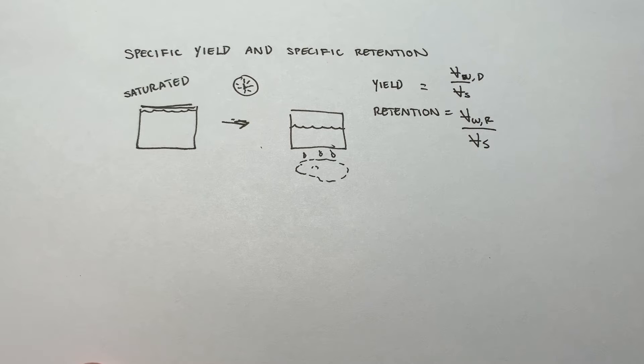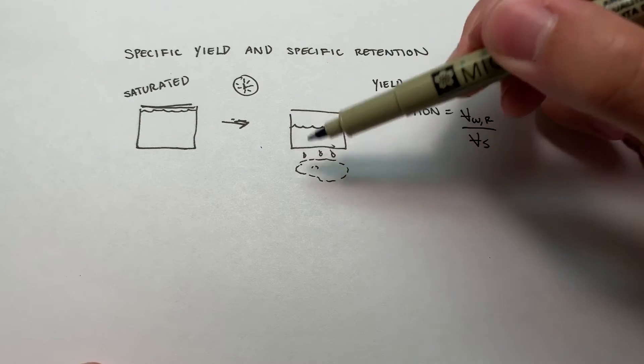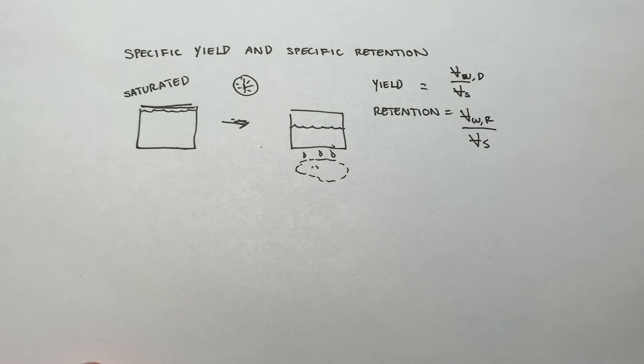So why would water be retained in the first place? Why wouldn't water just flow through this, like it would a pipe? Sure, it's got grains in it, but wouldn't it just slide past those?